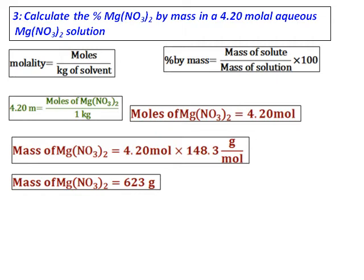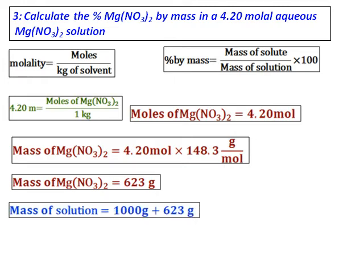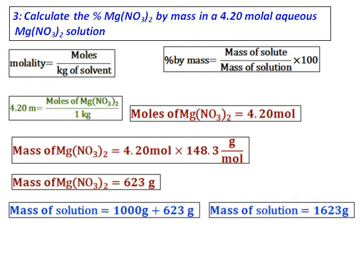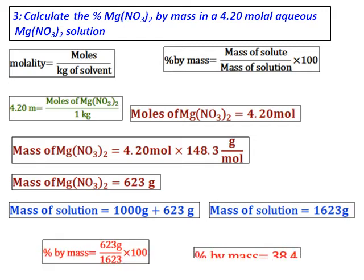Once I have the mass of the solute, I need the mass of the solution. Molality means moles per kilogram of solvent, so mass of solution equals 1000 grams of solvent plus 623 grams of solute, which equals 1623 grams. Now I have the mass of the solute and the mass of the solution. Substituting into the percent by mass formula, I get 38.4%.